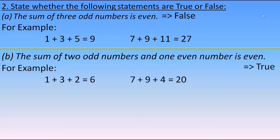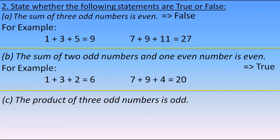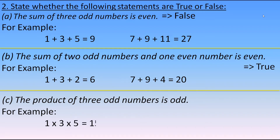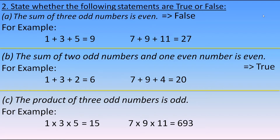Next statement: the product of three odd numbers is odd. Taking 1, 3, and 5 — their product is 15, which is odd. Another example: 7, 9, and 11 — their product is 693, which is also odd. So the product of three odd numbers is odd is true.